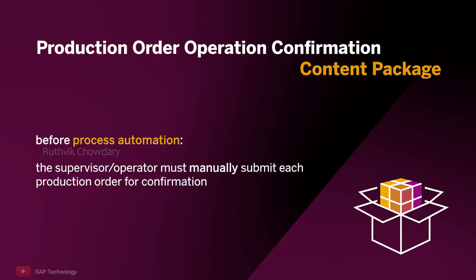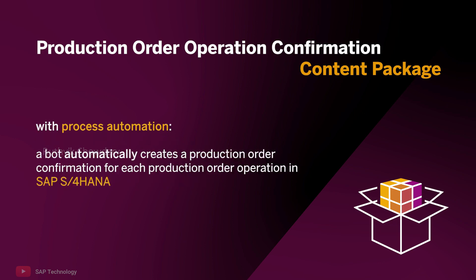Before leveraging process automation, the production supervisor had to manually submit each production order for confirmation after evaluating it. This time-consuming task can be automated with a bot which automatically generates production order confirmations for each production order operation in SAP S4HANA.